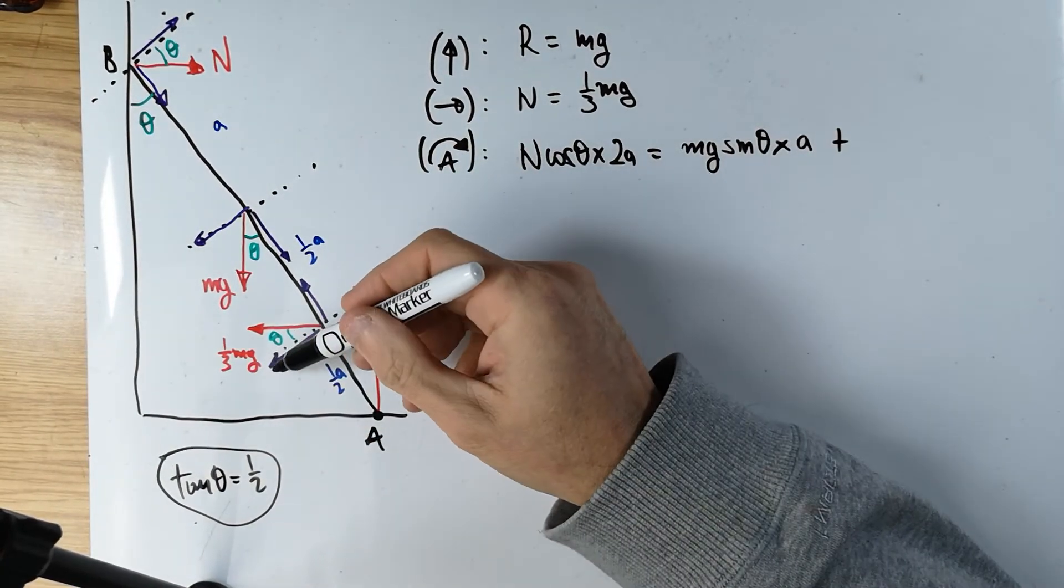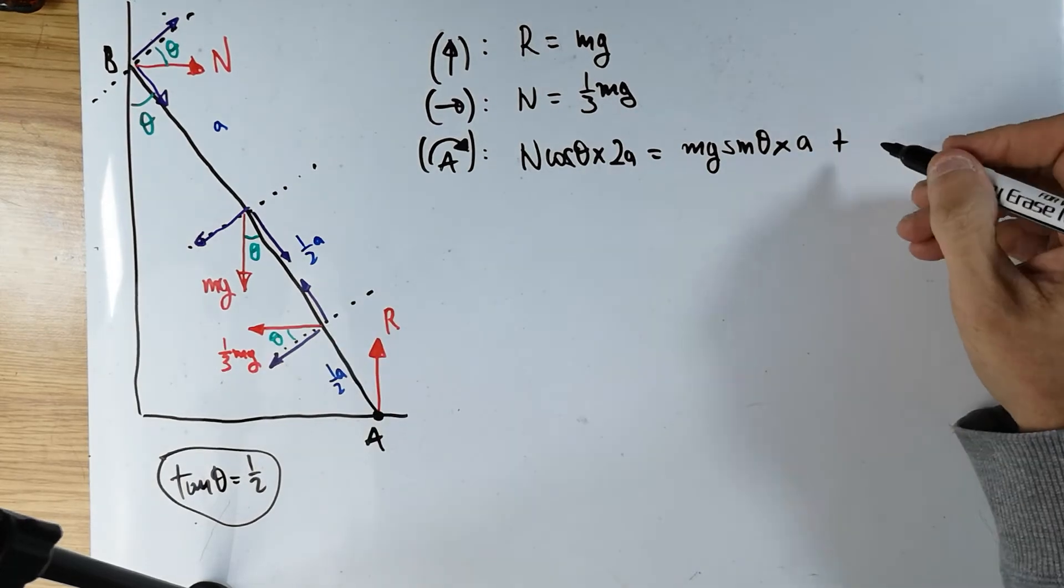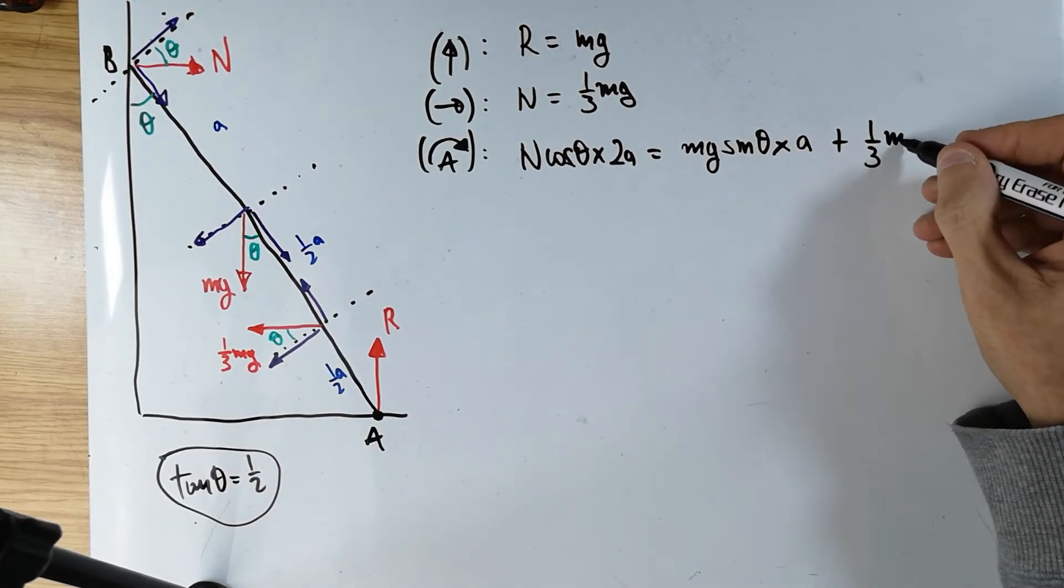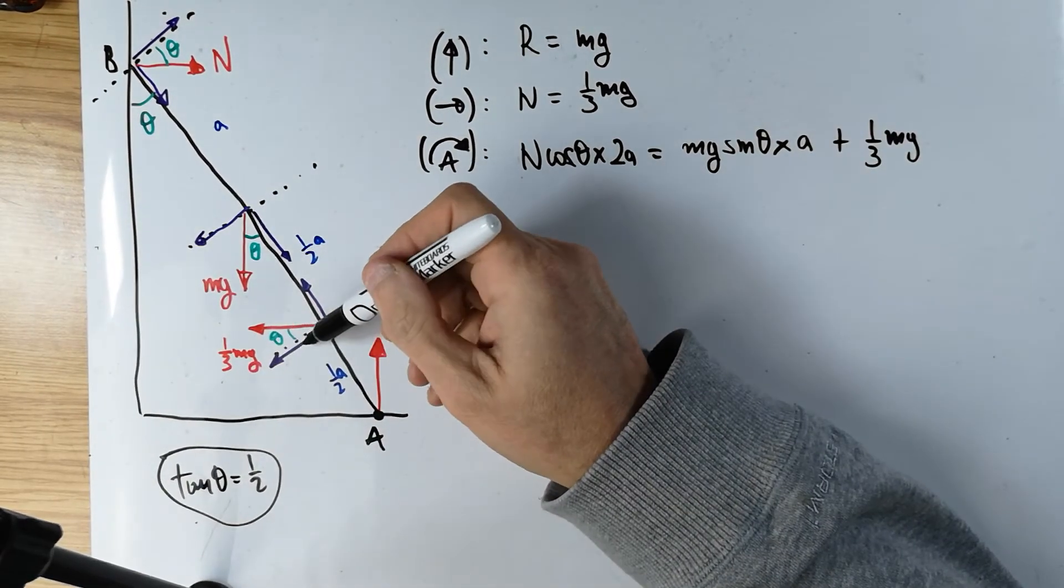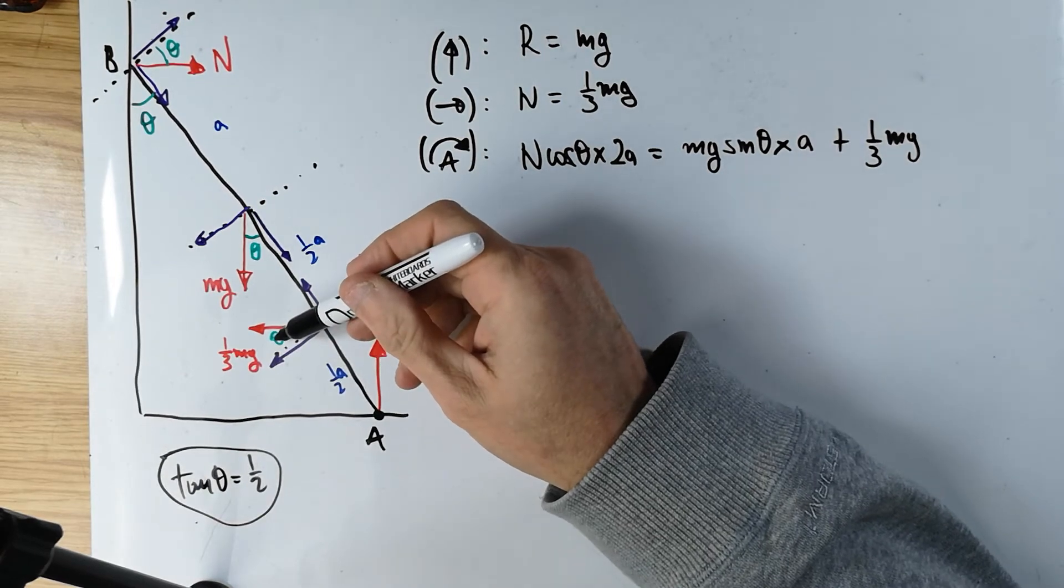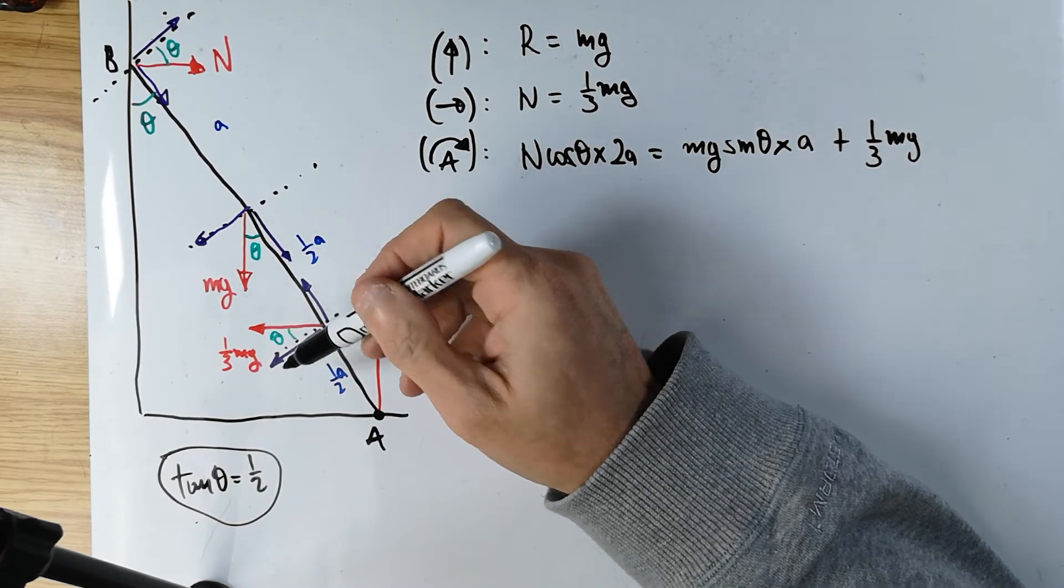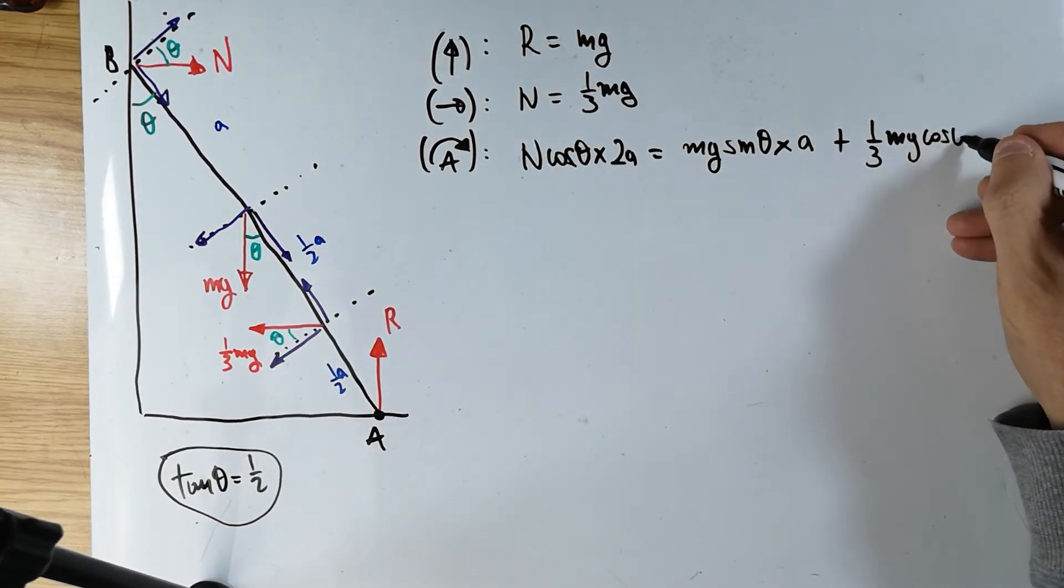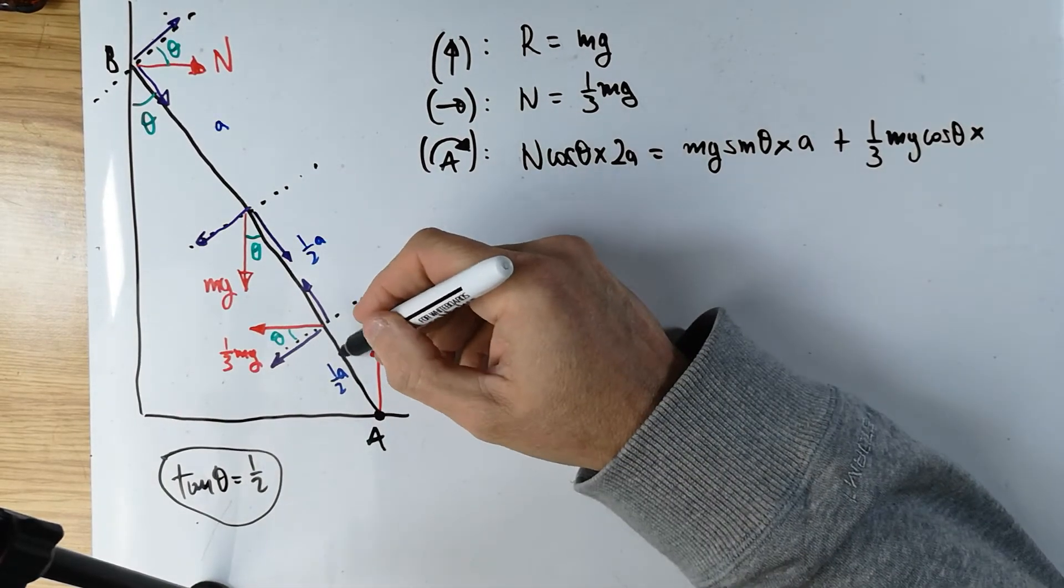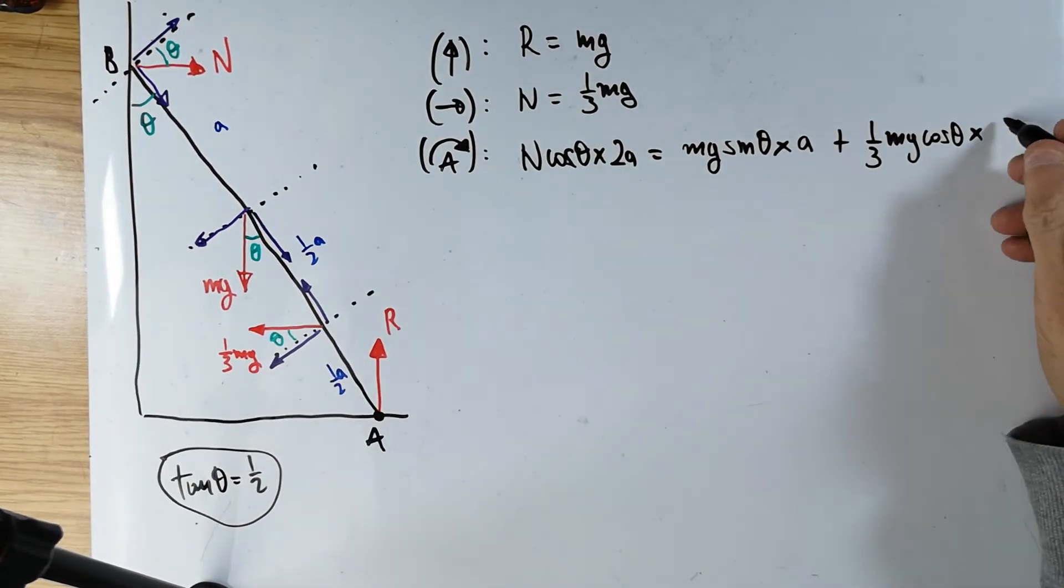Plus, this one also works together with this component, one third Mg. This one, is it the cos or is it the sine? The theta is on the side of the component, that's a cos. Cos theta times this distance from the pivot, and that's a half A.